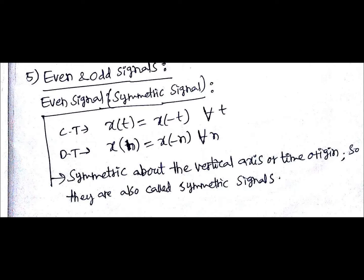In case of discrete time it will be x(n) equals x(-n) for all time or for all samples n. It is symmetric about the vertical axis or time origin, so they are also called symmetric signals.